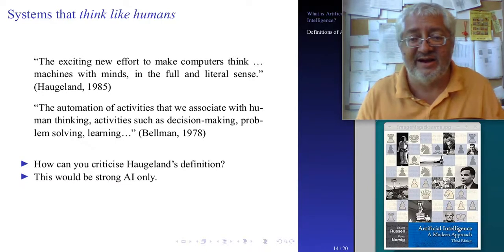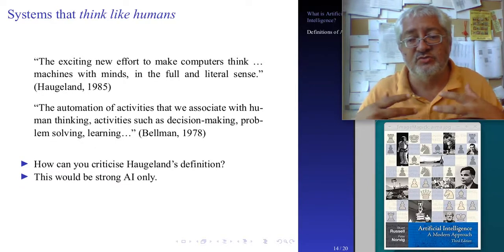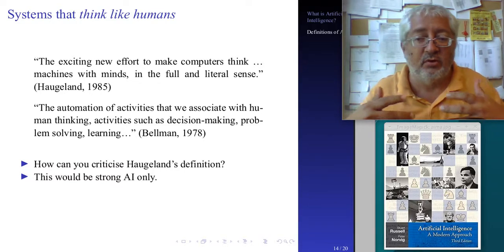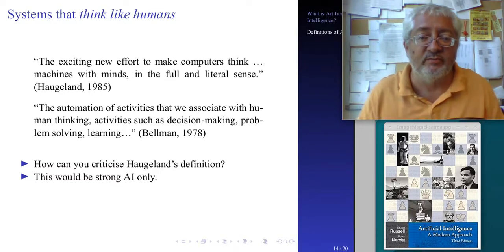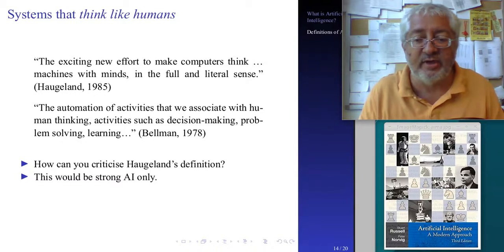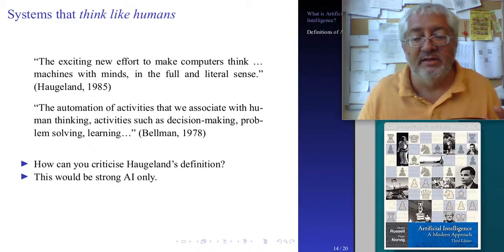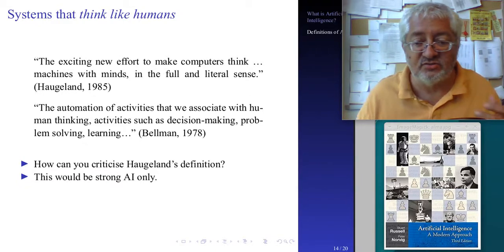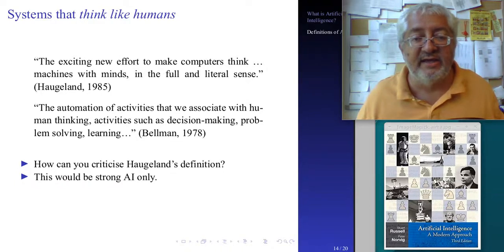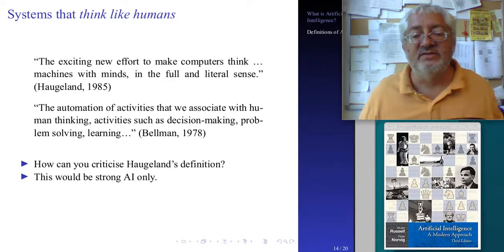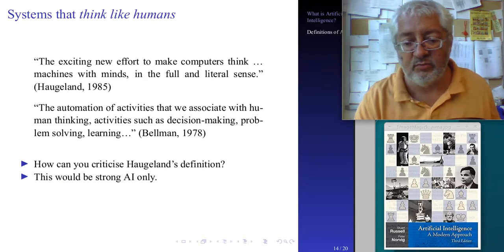A Tesla car, or a self-driving car in general, is one of the most advanced kinds of AI we have. Nobody would say it contains a literal mind. Your phone's Google Assistant — you talk to it and it dials a phone number — this is AI, but it does not contain a mind. So this definition would just exclude all the AI we actually have.